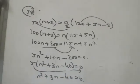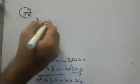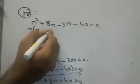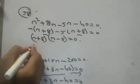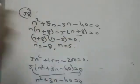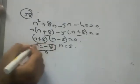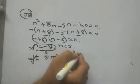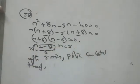To factor n² + 3n − 40 = 0: we need 8 and −5, since 8 × (−5) = −40 and 8 + (−5) = 3. So: n² + 8n − 5n − 40 = 0, giving (n+8)(n−5) = 0. Therefore n = −8 or n = 5. But time cannot be negative, so n = 5. After 5 minutes of travelling, the police can catch the thief.